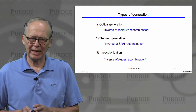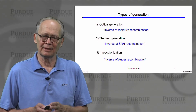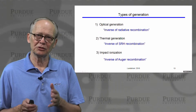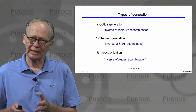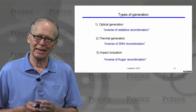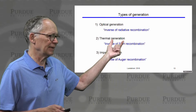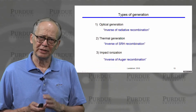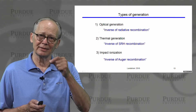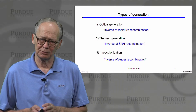We have different types of generation. Optical generation is the inverse process of radiative recombination, which is strong in direct gap semiconductors and weak in indirect gap semiconductors — and optical absorption follows the same pattern. Carriers can also recombine through defects in the middle of the forbidden gap, and inversely, carriers can be generated when excited from the valence band to a defect and then to the conduction band. That's the inverse of the Shockley-Read-Hall recombination process.